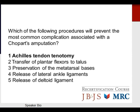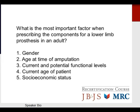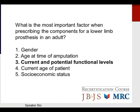Question: What is the most important factor when prescribing components for a lower limb prosthesis in an adult? Options: gender, age at amputation, current and potential functional levels, current age, or socioeconomic status. The most important factor is the current and potential functional level, which can be affected by age, activity type, and the morbidity that led to the amputation.